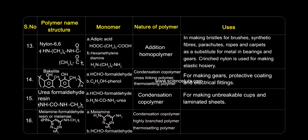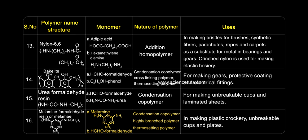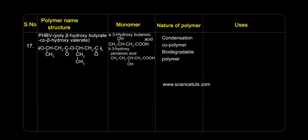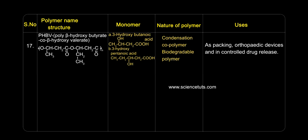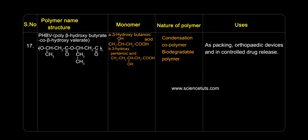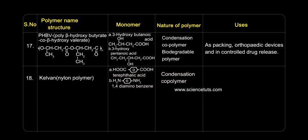Melamine formaldehyde resin (Melamine): used in making plastic crockery, unbreakable cups and plates. PHBV (Poly-beta-hydroxybutyrate-co-beta-hydroxyvalerate): used as packing material, in orthopaedic devices, and in controlled drug release. Kevlar nylon polymer: used for making bulletproof vests.